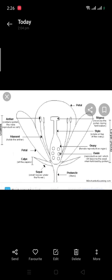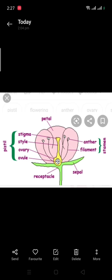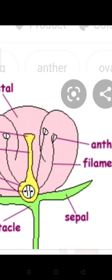The calyx is the outermost whorl and is composed of small green leaves called sepals, which protect the bud. This is the calyx here. All the sepals together form the calyx. This is the sepals, this is the green part.